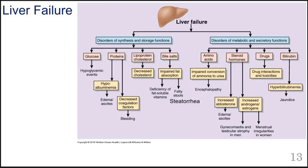Before we look at our case study relating to cirrhosis, I'd like to remind you of the many different potential outcomes of liver failure, starting with glucose. The liver is responsible for not only making new glucose in gluconeogenesis, but also storing excess glucose as glycogen so that when blood glucose levels need to be balanced, that glycogen can be broken down into glucose and put into the blood, returning the body to homeostasis. If we don't have this ability, it can lead to hypoglycemic events.